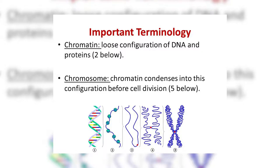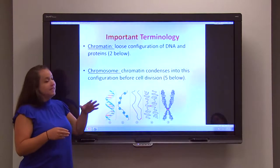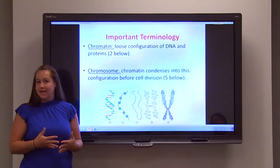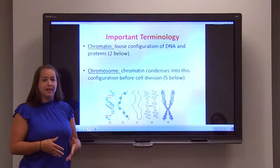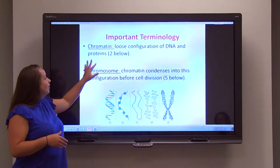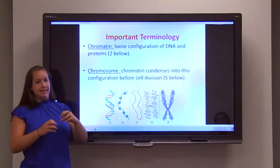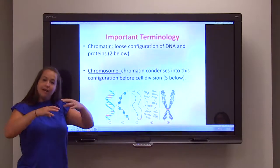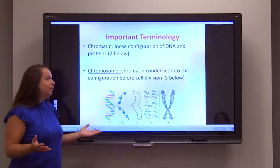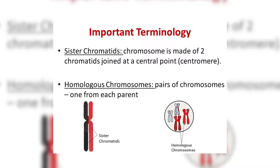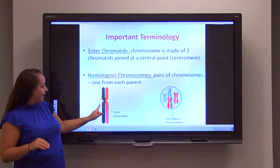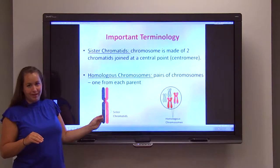Some important terms to review: the first one is chromatin. Remember, chromatin is that loosely packed DNA — this is how it normally exists inside a resting cell, so that it can be easily accessible for things like protein formation. When you get ready to divide, chromatin condenses down into a chromosome — think of packing it away in boxes so that you don't lose it when you move. Sister chromatids: the chromosome is made out of two sister chromatids, one half of each X, joined together by that central point, which is your centromere.